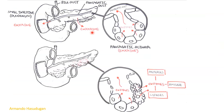Looking at the normal functioning of the pancreas: it is both an exocrine and endocrine gland. The exocrine function is carried out by acinar cells, which release enzymes into the pancreatic duct. In acute pancreatitis, there is acinar cell injury which results in release and activation of enzymes like proteases, amylases, and lipases, resulting in pancreatic inflammation and necrosis.